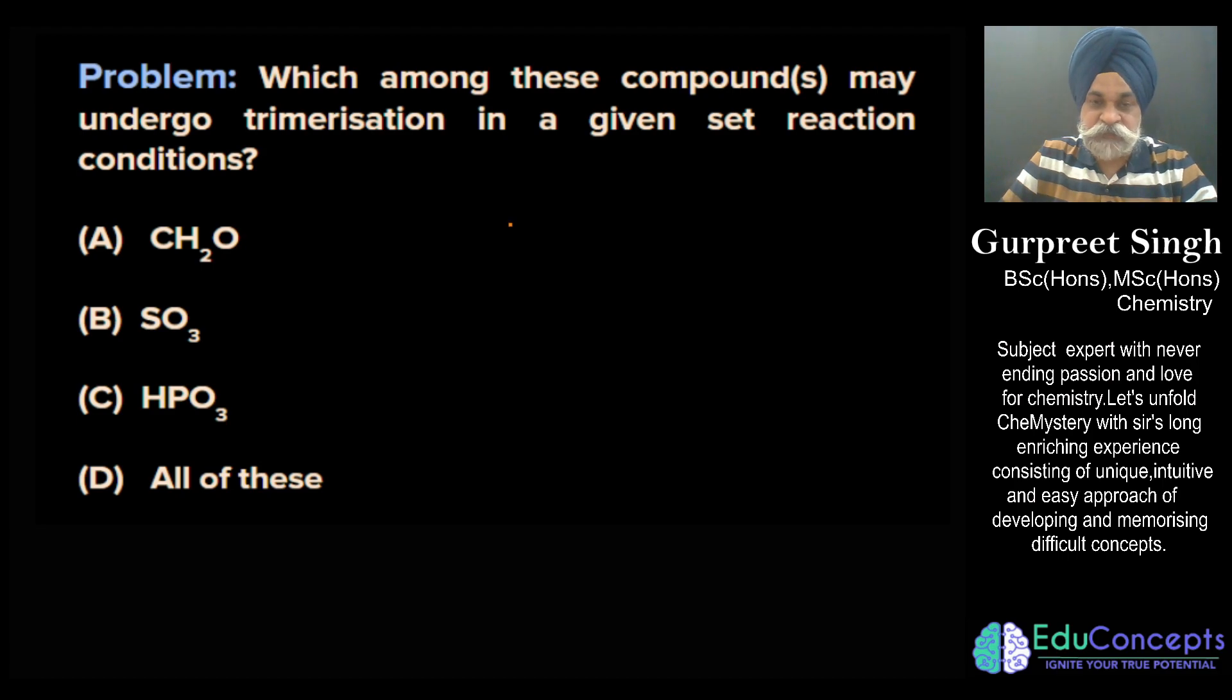So if you have a good hold on both things, you are able to answer it. Which of the following compounds may undergo trimerization in a given set of reaction conditions? The three compounds are formaldehyde, SO3, and metaphosphoric acid.